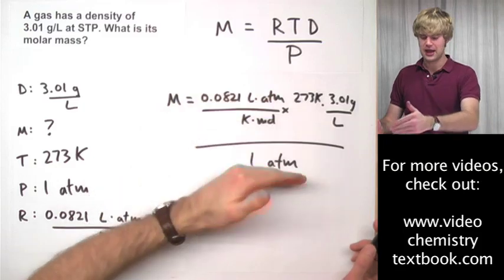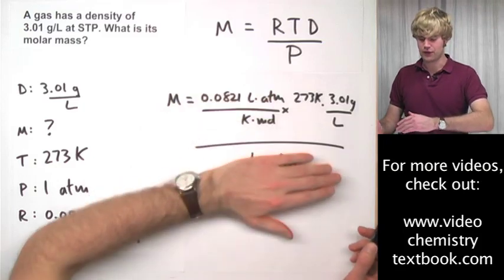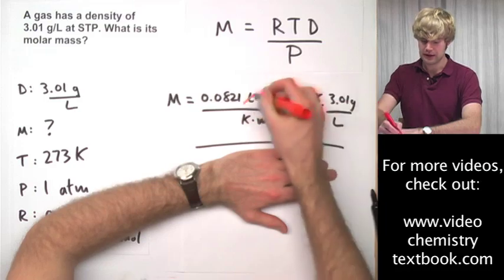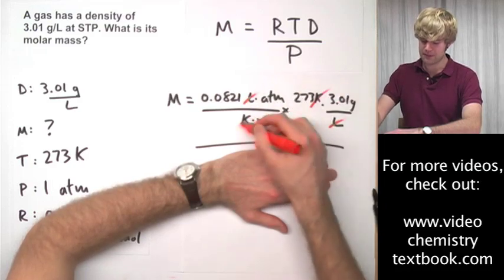Now we've got to cancel units in this ugly triple-decker fraction. Let's look just at the top. What can we cancel here? Liters up here, liters down there. Kelvin up here, Kelvin down there.